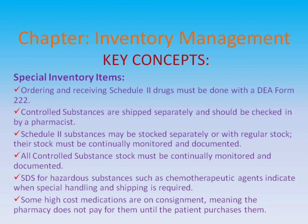Special inventory items: ordering and receiving Schedule II drugs must be done with a DEA Form 222. Controlled substances are shipped separately and should be checked in by a pharmacist. Schedule II substances may be stocked separately or with regular stock, and their stock must be continually monitored and documented. All controlled substance stock must be continually monitored and documented. Safety data sheets, or SDS, for hazardous substances such as chemotherapeutic agents indicate when special handling and shipping is required. Some high-cost medications are on consignment, meaning the pharmacy does not pay for them until the patient purchases them.